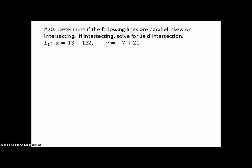Number 20. Determine if the following lines are parallel, skew, or intersecting. If intersecting, solve for set intersection. Here's L1 in parametric form, and here's L2 in parametric form. Notice that skew means they are neither parallel nor intersecting, which is possible in three dimensions. And we are in the department of silly numbers.